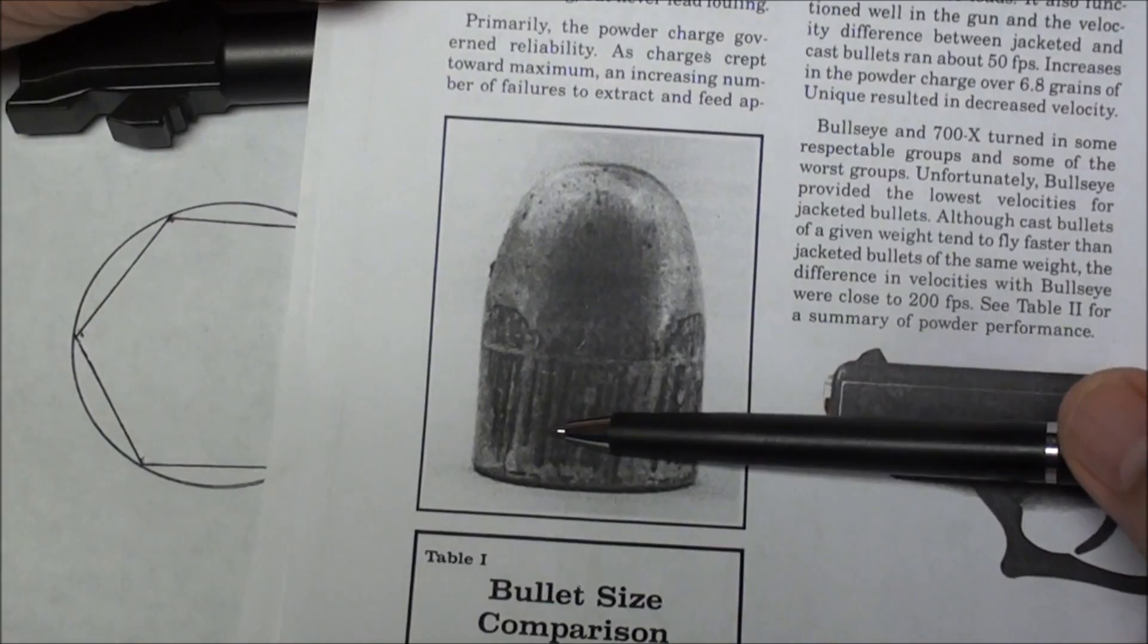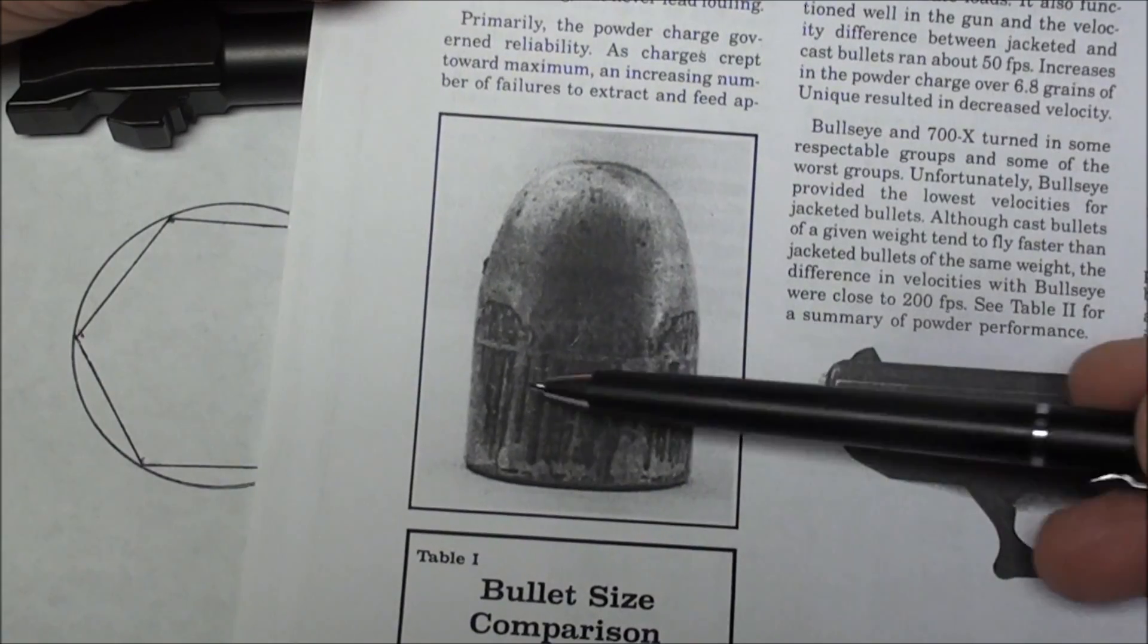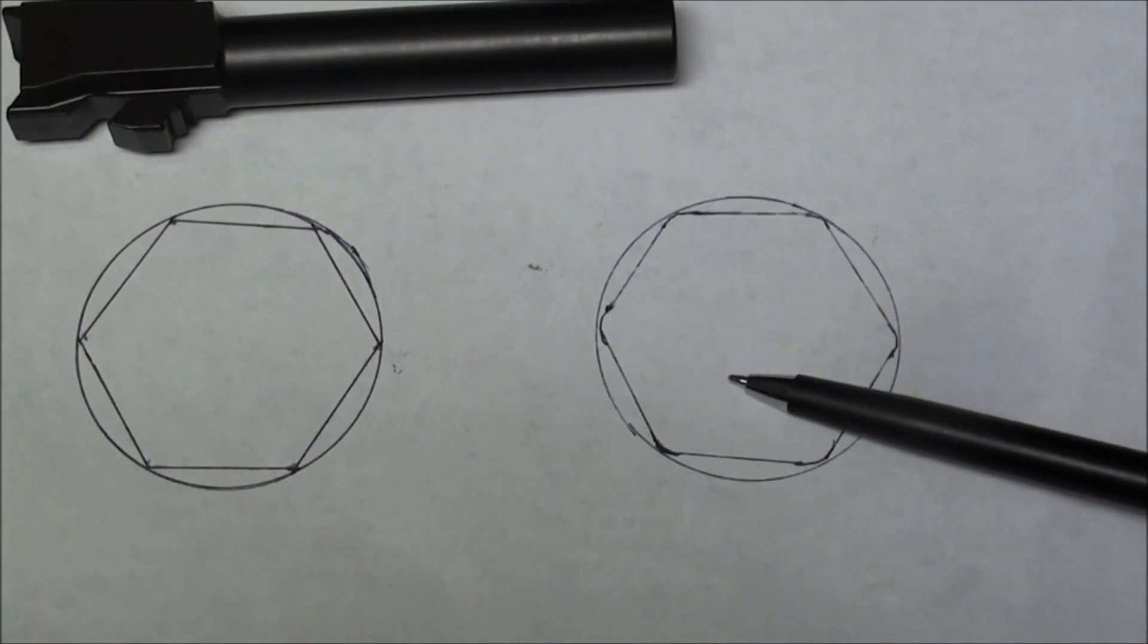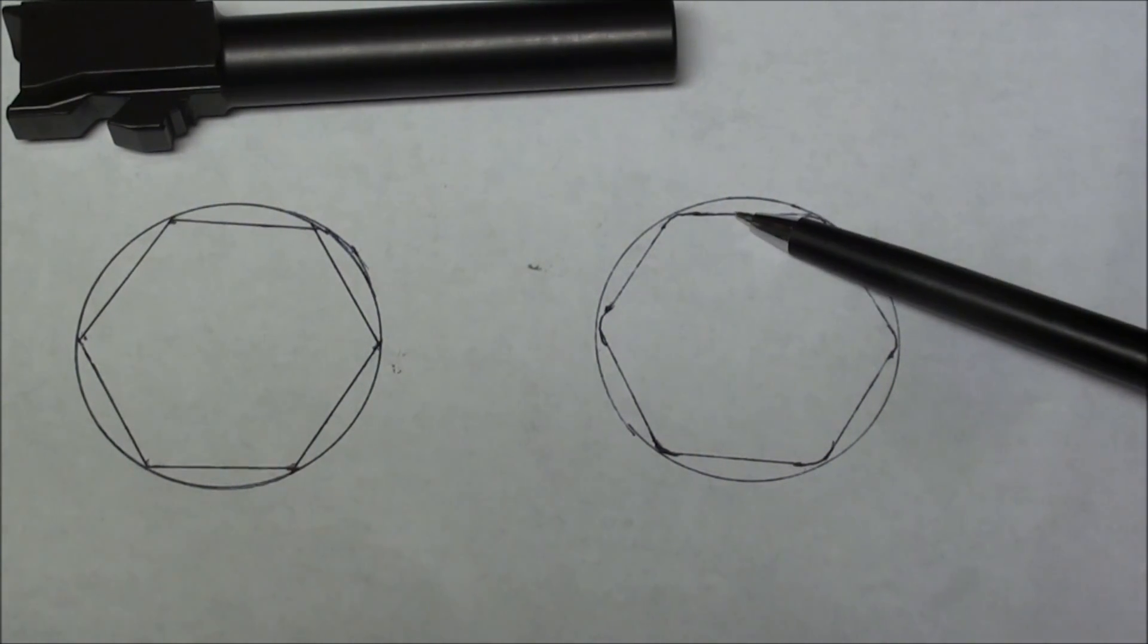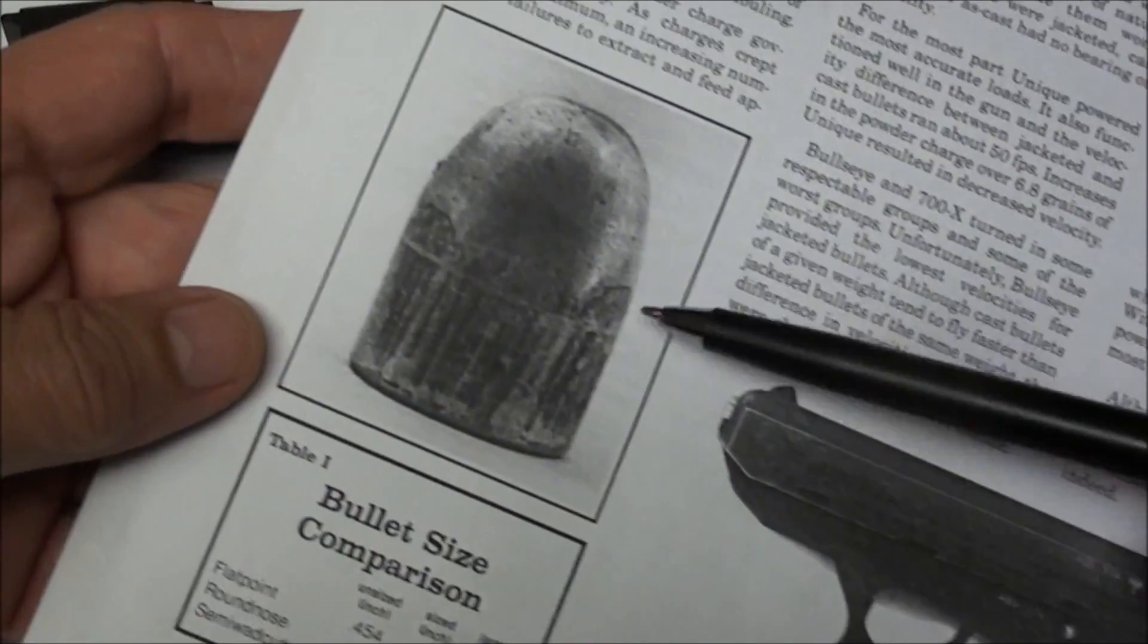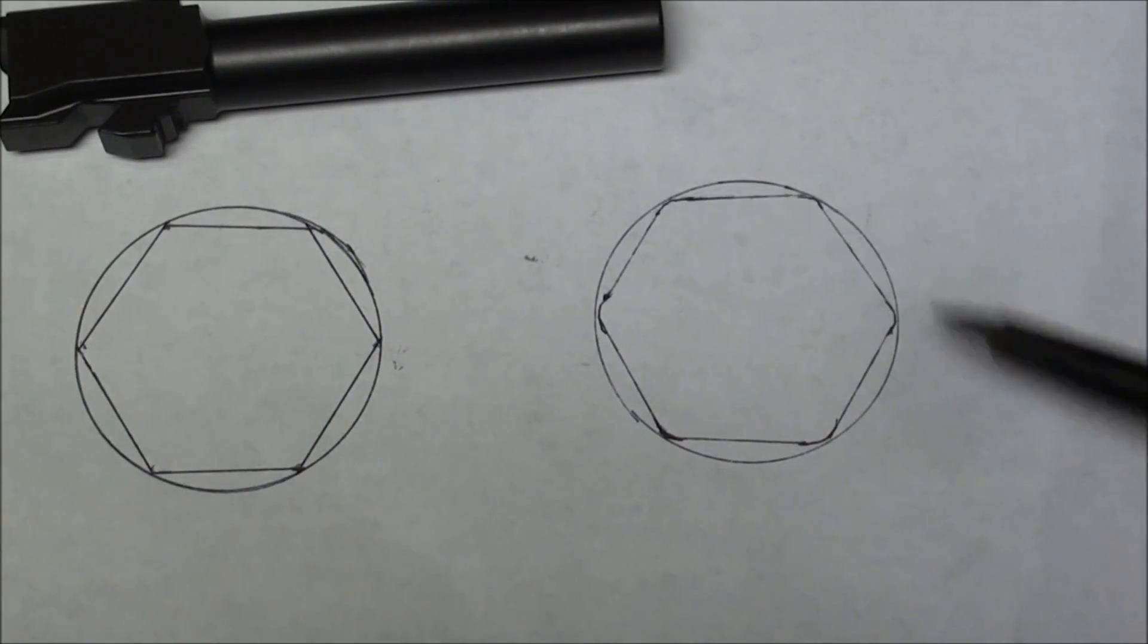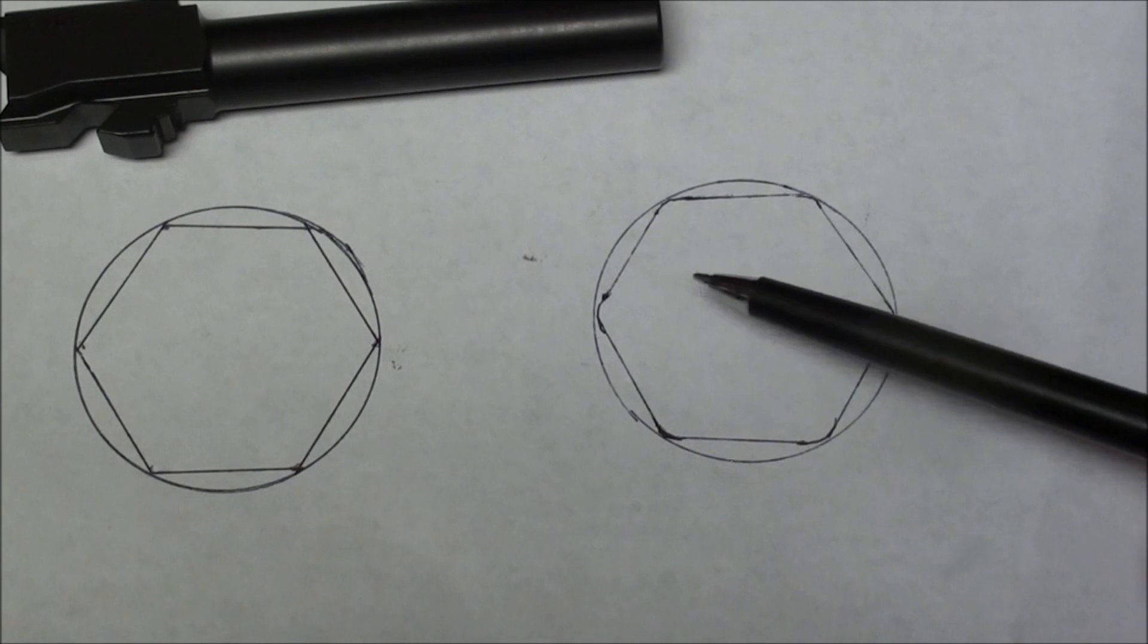If you look at a bullet fired from a polygonal rifle barrel, you'll see flats and you'll see hills between the flats, but you won't see any valleys. In the rifling itself you'll see valleys which make the hills on the bullet, and flats which make the flats on the bullet. But you won't see any hills on the rifling that make valleys on the bullet. There are no valleys on the bullet, only hills and flats. That's because the rifling only has valleys and flats.